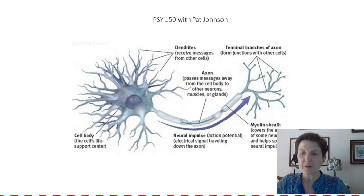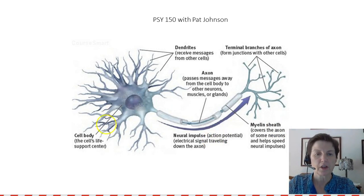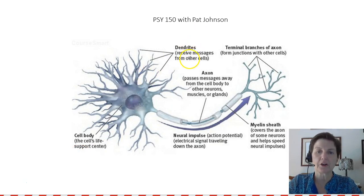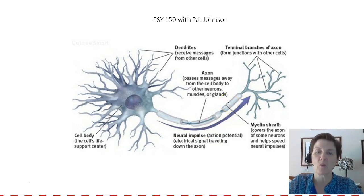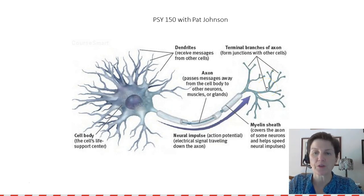Here's the neuron from your textbook. The cell body is labeled as the cell's life support center. Here are the dendrites — they receive messages from other cells. Here's the axon; it passes messages away from the cell body to other neurons, muscles, or glands. The neural impulse goes in this direction. The myelin sheath covers the axon and helps speed up neural impulses. Here are the terminal branches — they form junctions with other terminals or other cells. And right here would be the axon terminal.